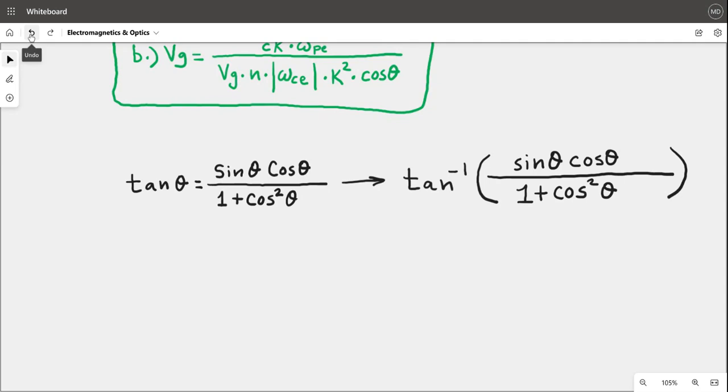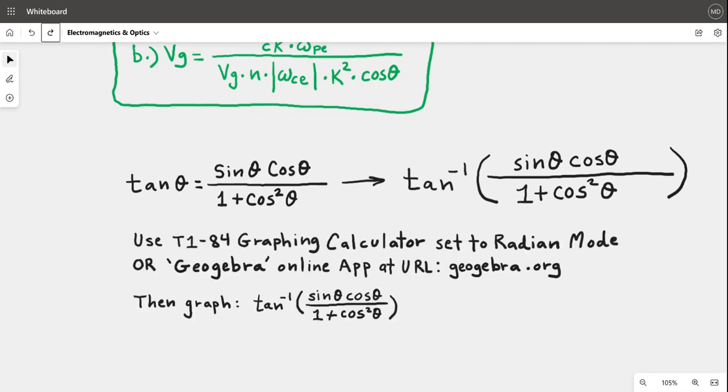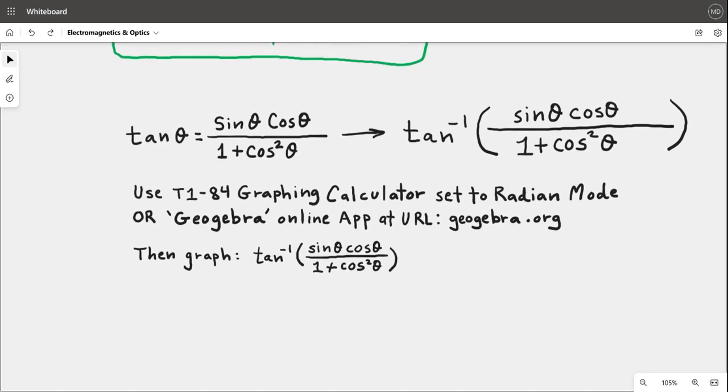Use the inverse tangent of some tangent angle as specified, then use the TI-84 graphing calculator or a graphing calculator capable of trigonometric graphing functions. There's the GeoGebra online app at geogebra.org, which is a really nice graphing universal calculator. Put the inverse tangent of that function, sin θ times cos θ divided by 1 plus cos² θ, and make sure you set the mode to radian mode to do these types of problems.